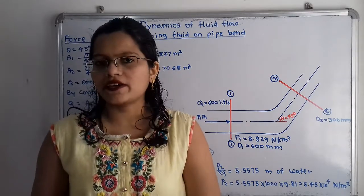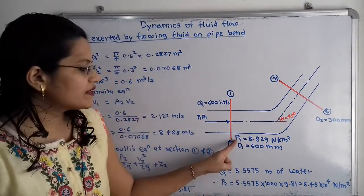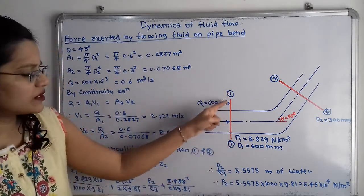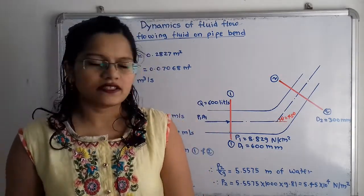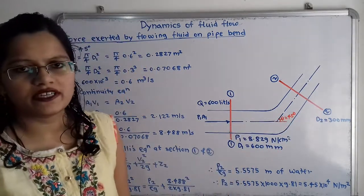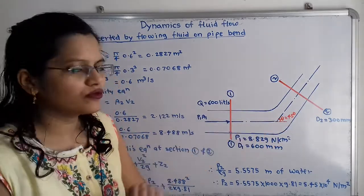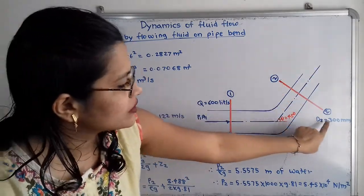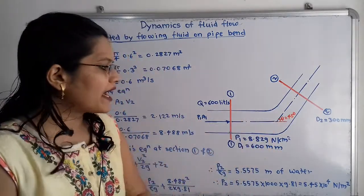We will understand the diagram as per the given data. At inlet, the diameter of pipe is 600 mm and pressure intensity p1 = 8.829 N/cm². We consider this as section 1-1. The angle of bend is 45 degrees — here is the horizontal centerline at the inlet, and at this point theta equals 45 degrees. We extend the centerline along this 45-degree inclined line to the outlet, where d2 = 300 mm. The outlet is section 2-2.